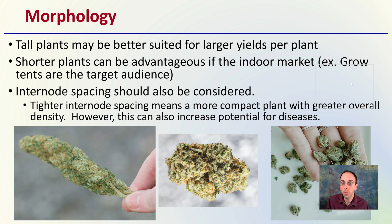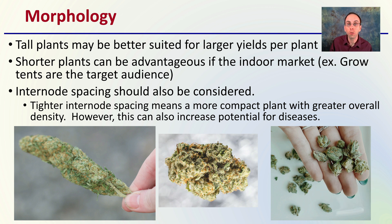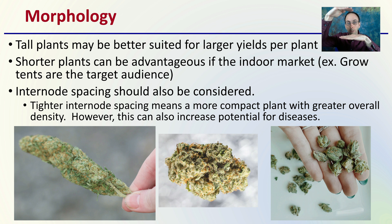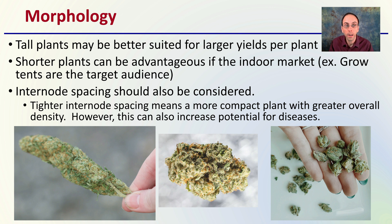Morphology is the first consideration — it refers to the structure of the plant. Tall plants may be better suited for larger yields per plant, while shorter plants are more advantageous for the indoor market, such as those growing in grow tents. Internode spacing should be measured: tighter spacing means a more compact plant, while greater spacing means a taller plant. However, tight compact plants can increase density and also increase the potential for diseases or insects to hide within the plant.